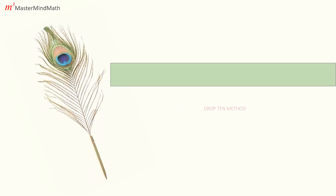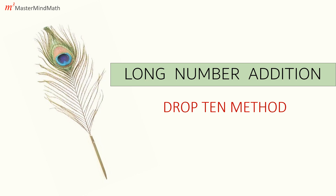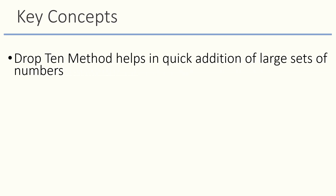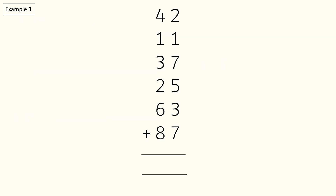Will you be surprised if I tell you that once you learn today's concept you will be able to do additions in under 10 seconds? Today we will learn about the Drop 10 method of addition in Vedic math, since it makes adding a list of numbers super easy and fast. It is also called the long number addition. The Drop 10 method helps in quick addition of large sets of numbers. In the examples you will see red dots — these dots represent 10.